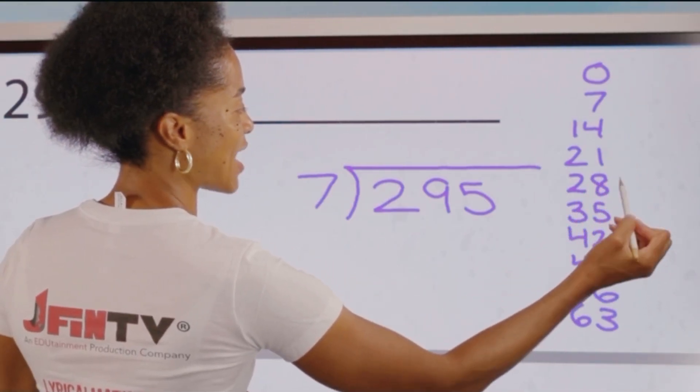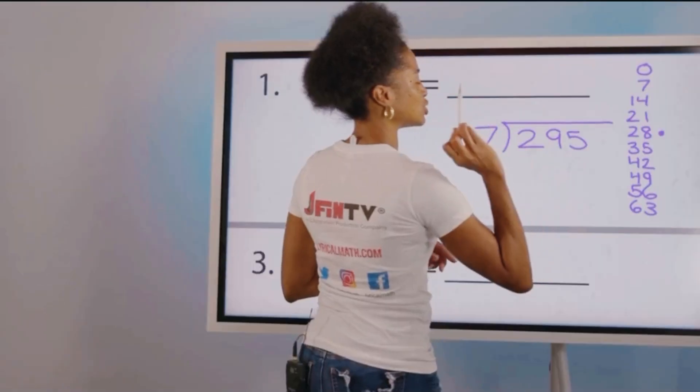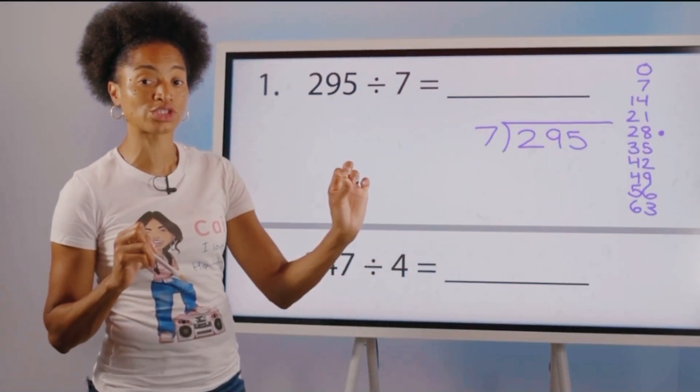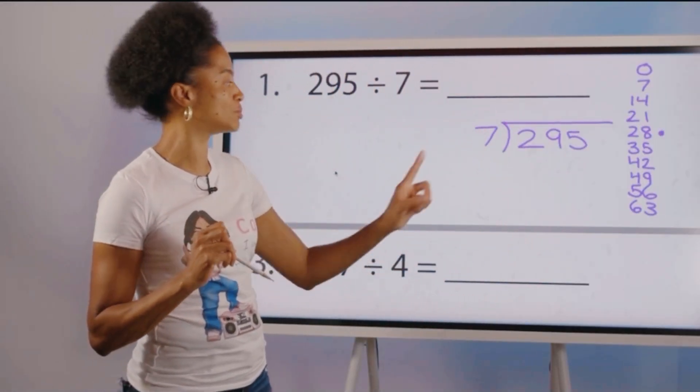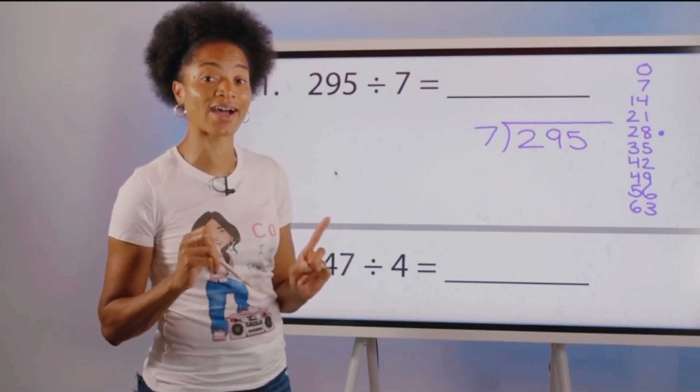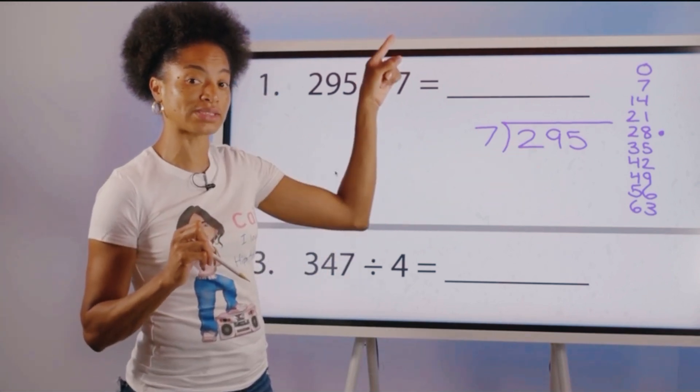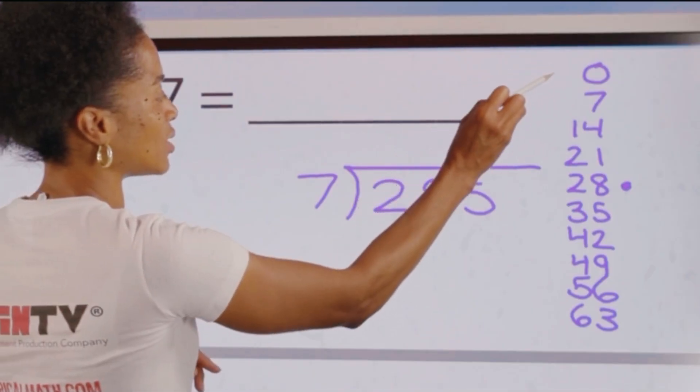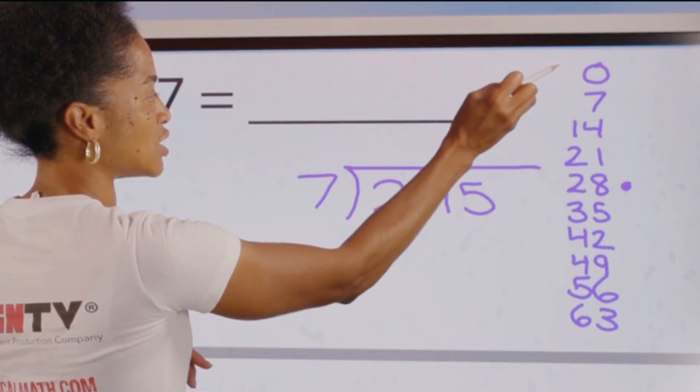You see that. Alright, so step 1 is divide. We're going to find out how many groups of 7 we can get out of 29 and put that number at the top. How do we do that? Count down.